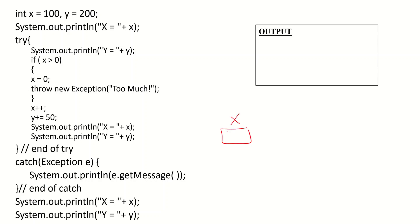We have x as 100 and y as 200. The first statement outputs x equal the value of x, so we will have the output: x equals 100. Then we will start our try block.